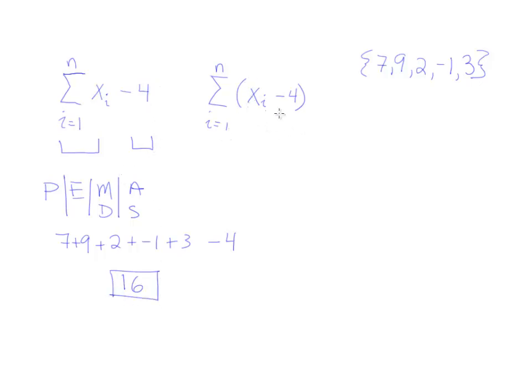Now for the second one, the parentheses preempt everything else. So we're going to do inside the parentheses first. So it's saying first, before anything else, you're going to subtract this 4 away from each of the x values.